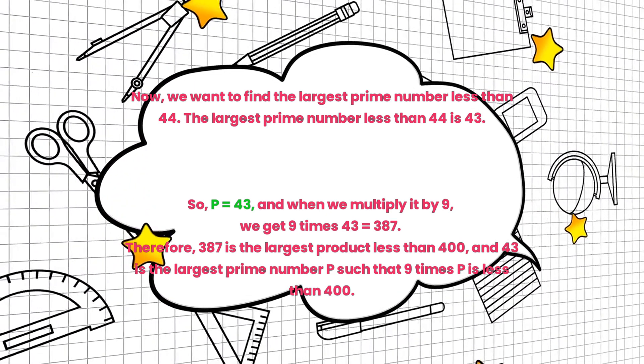So, P equals 43, and when we multiply it by 9, we get 9 times 43 equals 387.